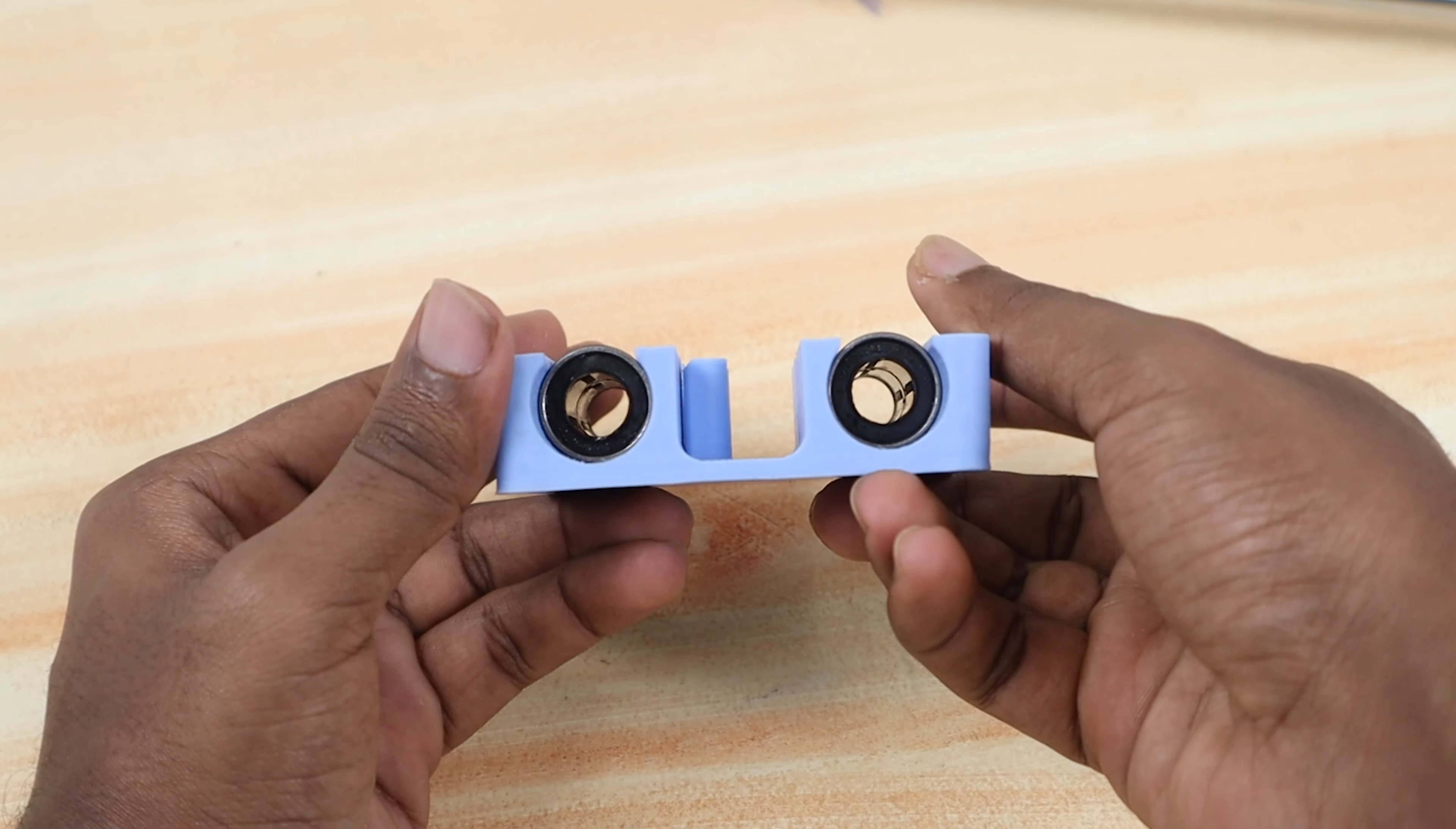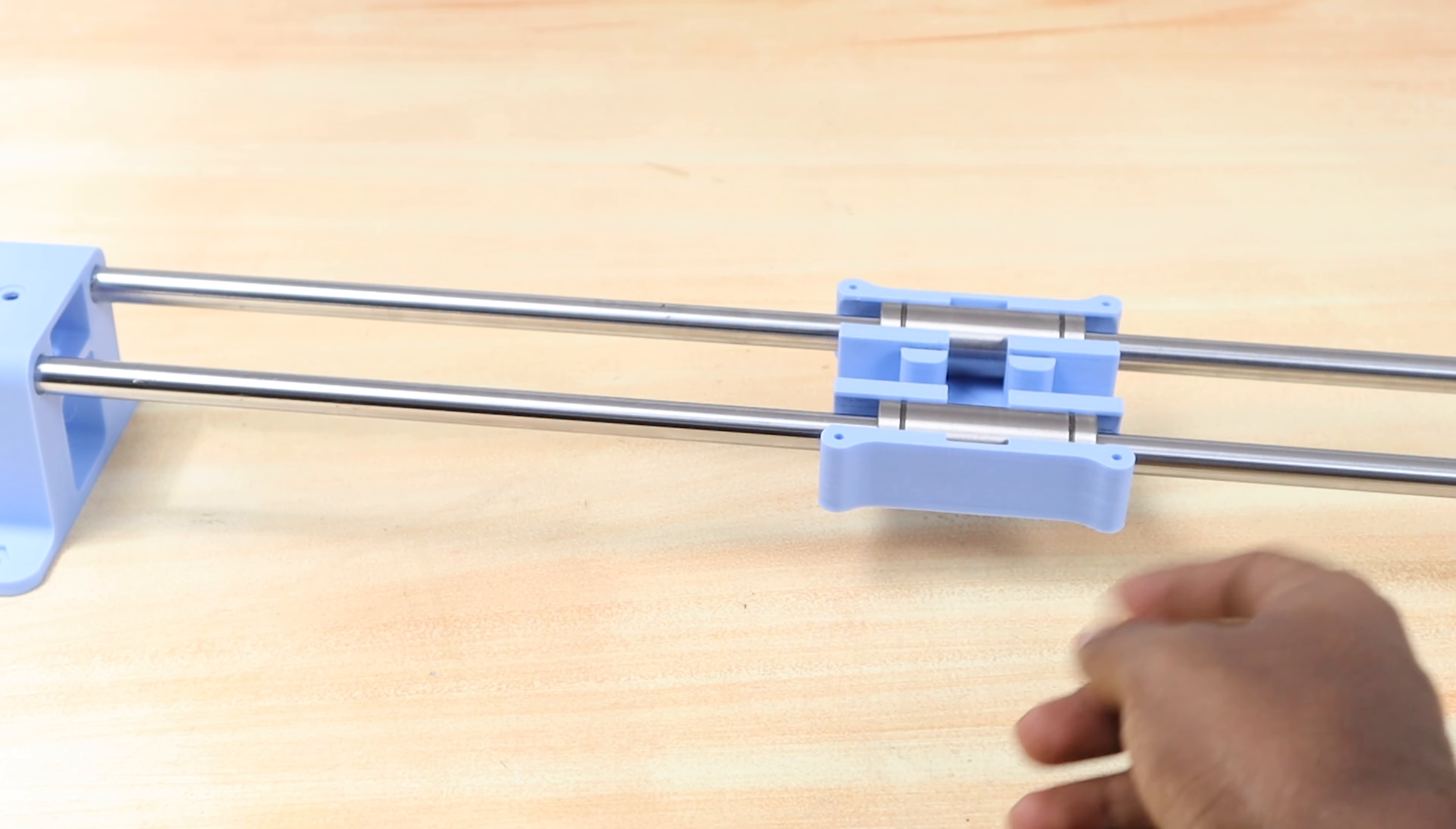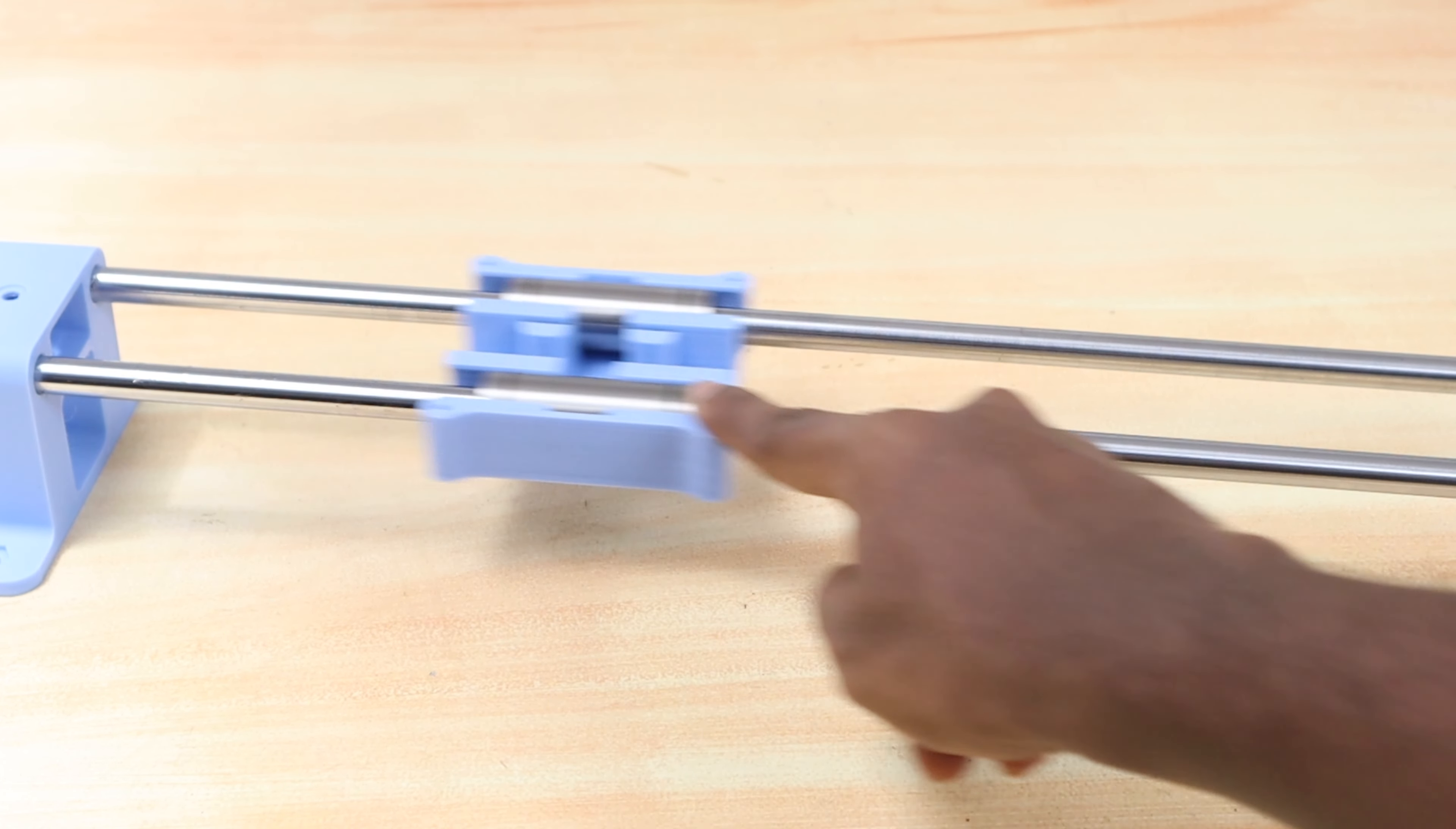To reduce the cost, here we used two larger ball bearings instead of four small ones. Then we inserted the X axis sliding block into the linear rods by applying a gentle push.